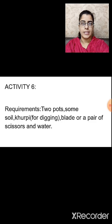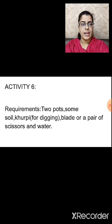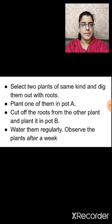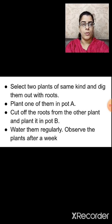Let us start with the first activity. To perform this activity, we will require two pots, some soil, a kurpi for digging, a blade or a pair of scissors, and water. Select two plants of the same kind and dig them out with the roots. Plant one of them in pot A as it is.